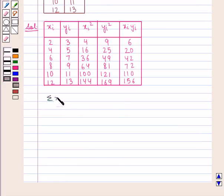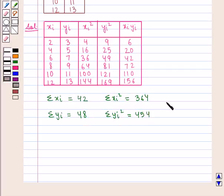Now summation of xi, i.e. sum of all the elements of xi is given by 42, summation of yi is given by 48, summation of xi square is given by 364, summation of yi square is given by 454 and summation of xi yi is given by 406.